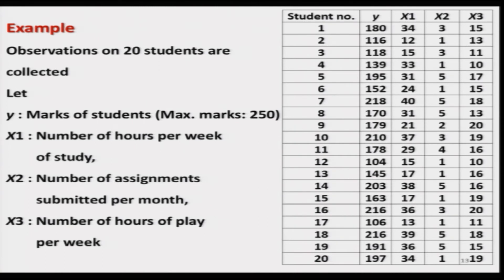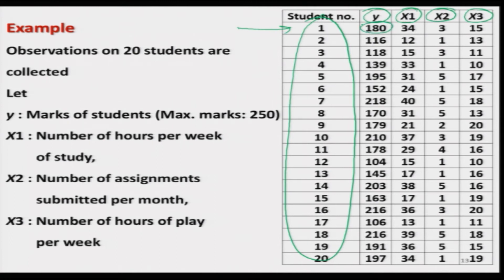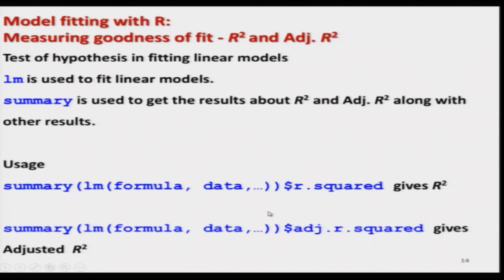Now I take a simple example — the same example I have considered a couple of times earlier — and I will show you how to obtain these values in the software. I am taking the same dataset with 20 observations on students: marks obtained by the students, number of hours per week the student studied, number of assignments submitted per month, and number of hours of play per week. These variables are denoted y, x₁, x₂, and x₃. For example, for the first student, the student got 180 marks out of 250, studied 34 hours per week, submitted 3 assignments per month, and played for 15 hours per week.